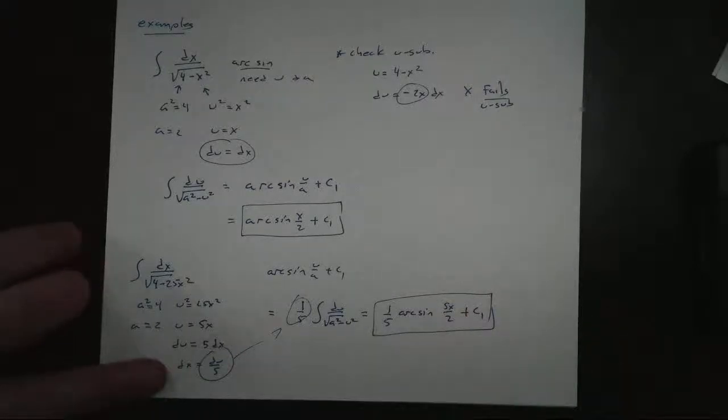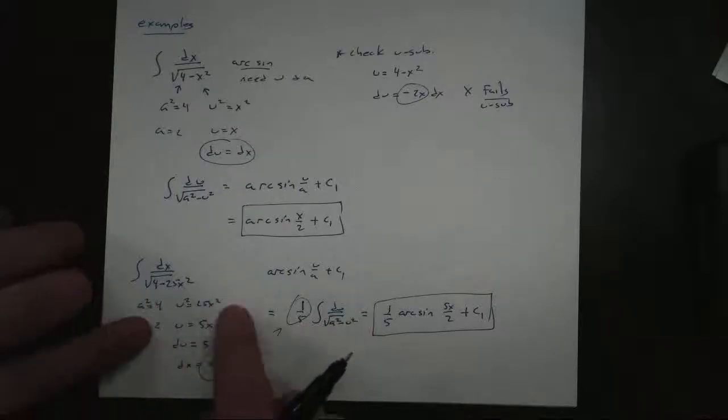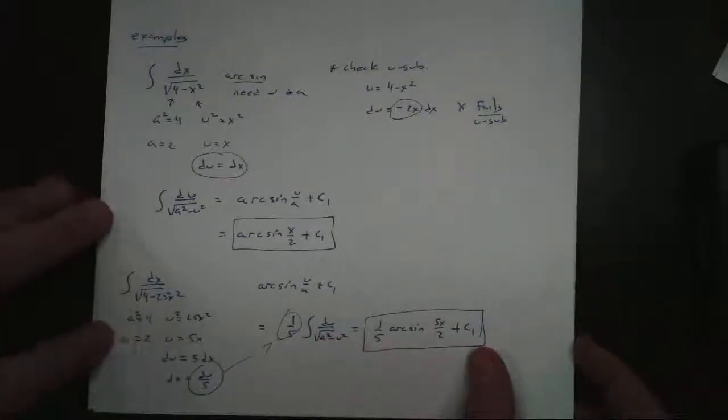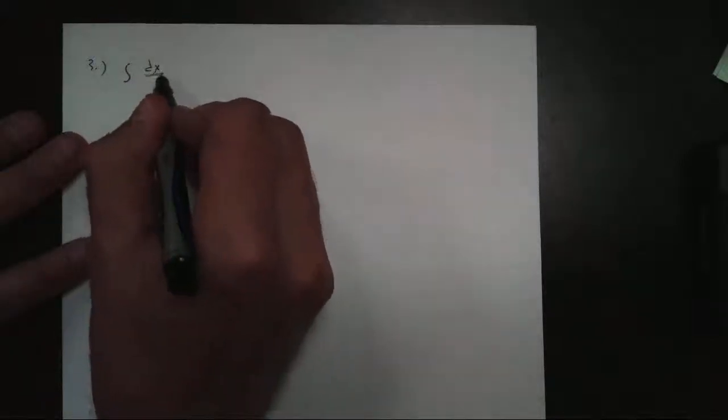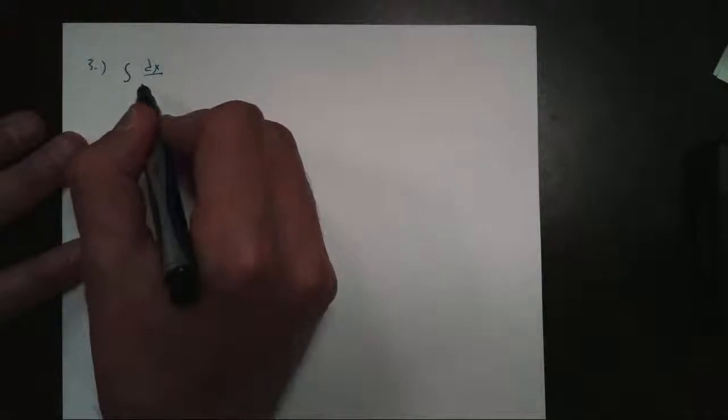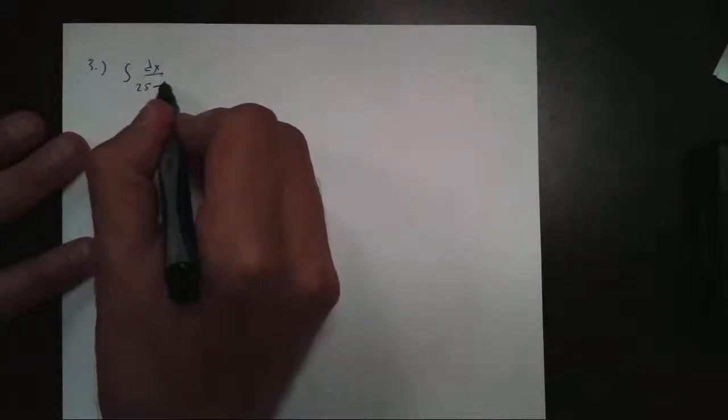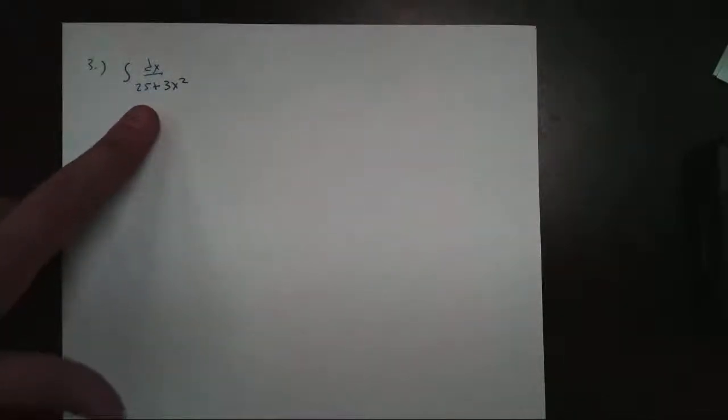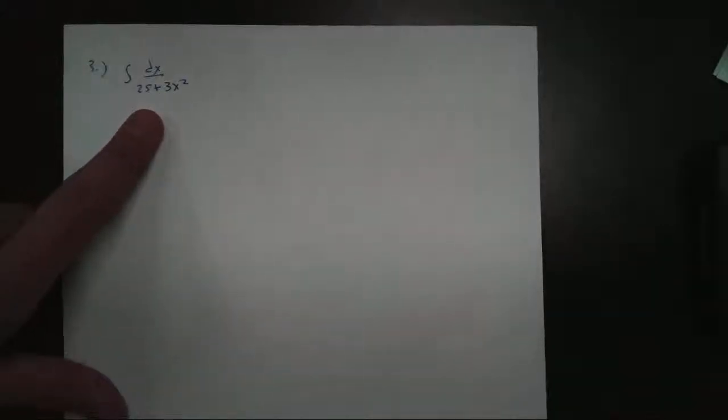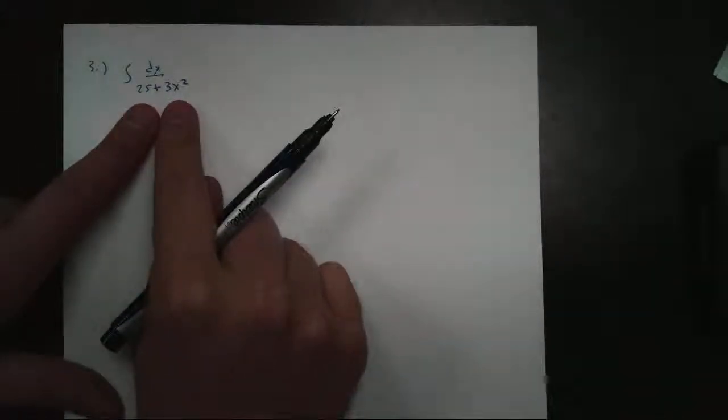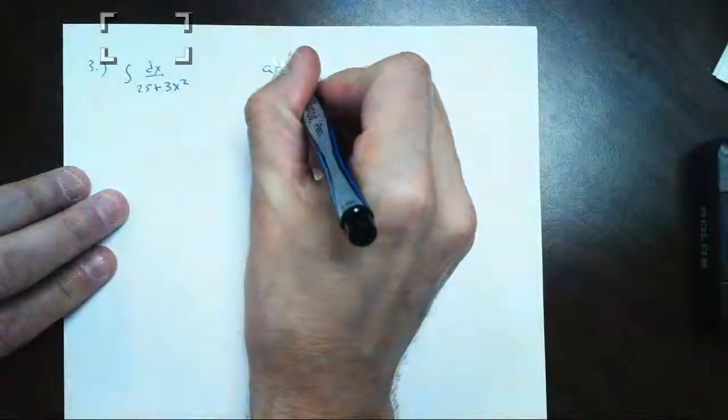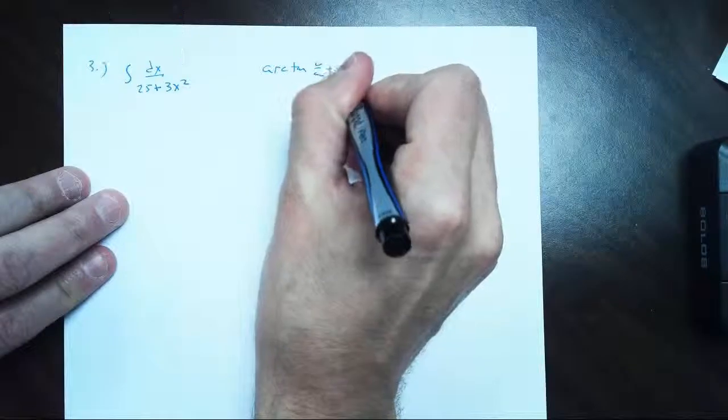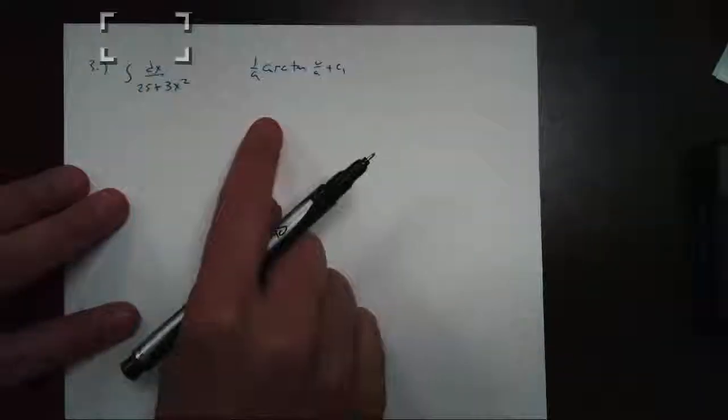So let's take a look at another example like this one. I'm going to show you that we don't have to do all this. We can go straight to our answer from here. So let's take a look at a third example real quickly. Number 3 here. We'll do the antiderivative of dx over 25 plus 3x squared. Now this is no longer our arc sine, but this is now our arc tangent.